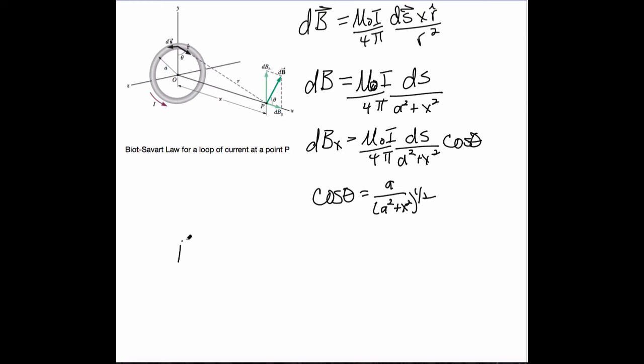So how does that help? All right. Well, BX is now equal to, let's see, this is changed up a bit, mu naught I over 4 pi. Let's leave the DS all the way at the end. Hang on. That's still a differential there. I dropped the DB.